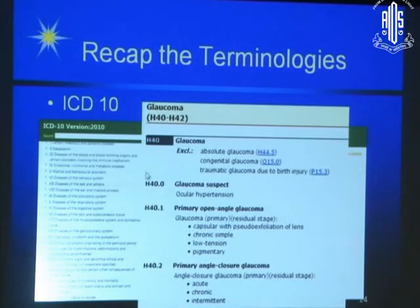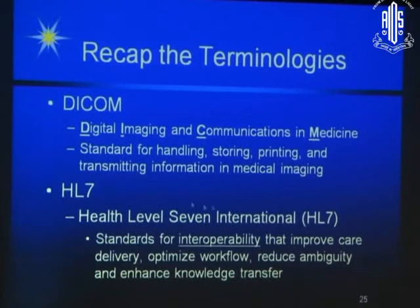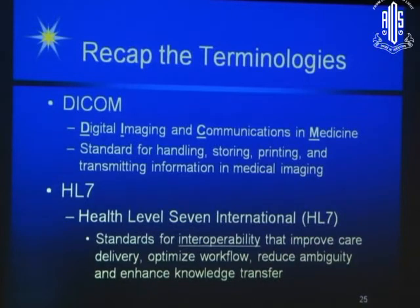Then you have the ICD-10. I took an example of glaucoma — you have all these lists. The advantage of ICD-10 was you could now say right eye and left eye; in ICD-9 you couldn't say that. These are all the acronyms I want to introduce to you. HL7 is very important. When we create a lot of data, we need to exchange this data with many people, optimize the workflow, and reduce ambiguity.